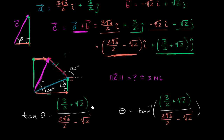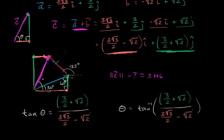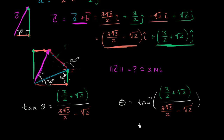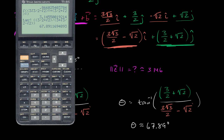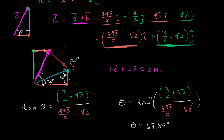So theta is approximately 67.89 degrees, and that looks about right — if you eyeball that angle, it looks like a little bit more than 60 degrees. So just like that, we were able to figure out the magnitude of the sum and the direction.